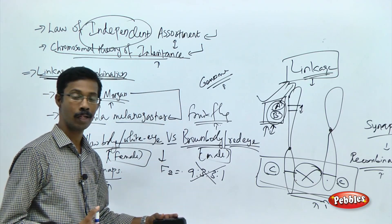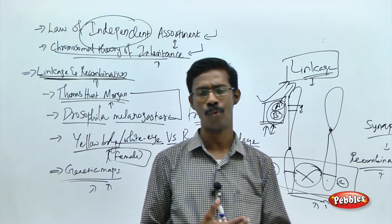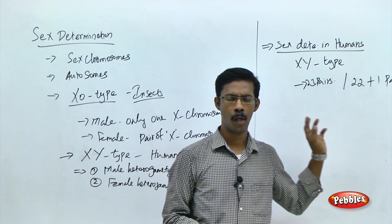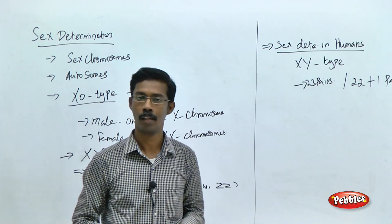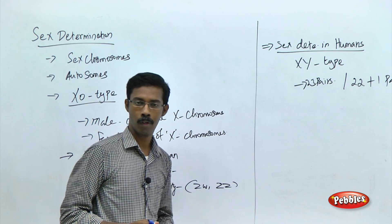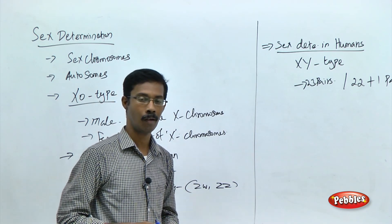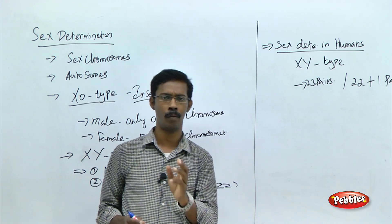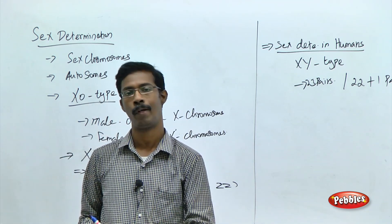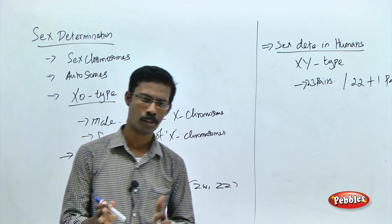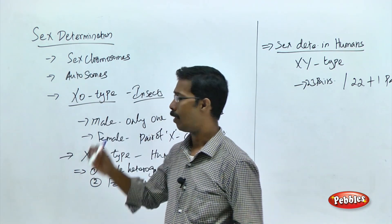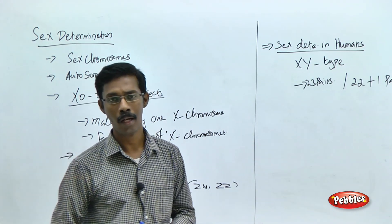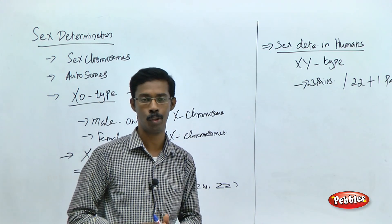Now we are going to proceed to the next topic: sex determination. Before that we will also see something about mutation. Each and every character of a living organism is controlled by genes on chromosomes, and scientists were puzzled about what factor determines the sex of an individual in any living species — whether an insect, bird, mammal, or human being.